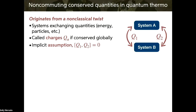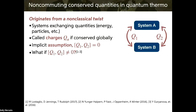An implicit assumption that's often present is that charges commute with one another. For example, this assumption underlies derivations of the thermal state's form and the Ansatz coefficients. However, if we want to do truly quantum thermodynamics, we have to at least allow for the possibility that charges may not commute. So we ask the question: what happens if they don't?